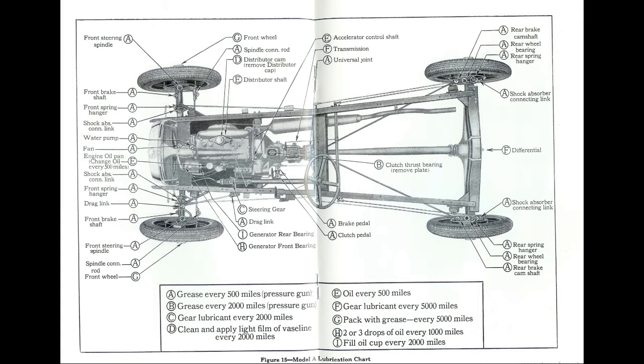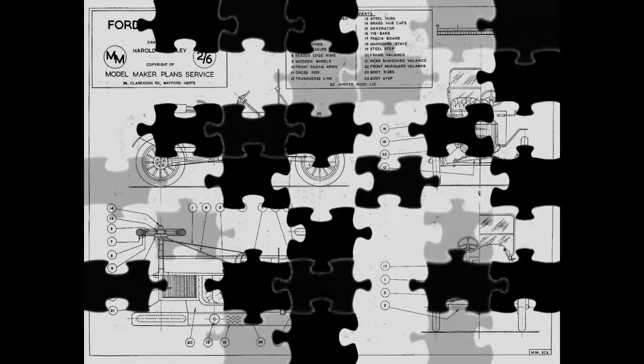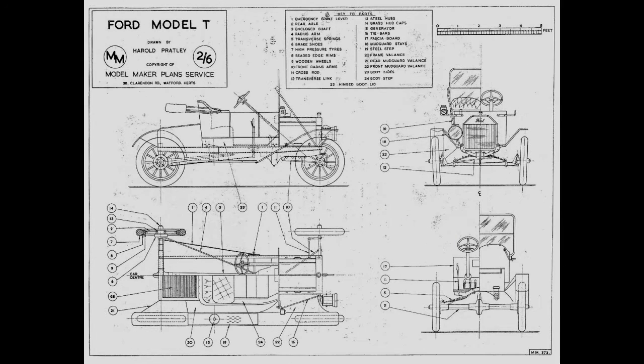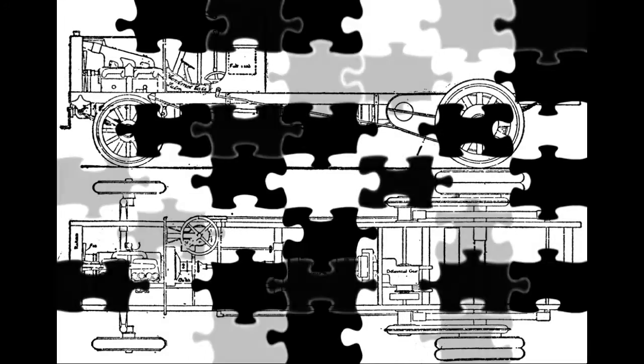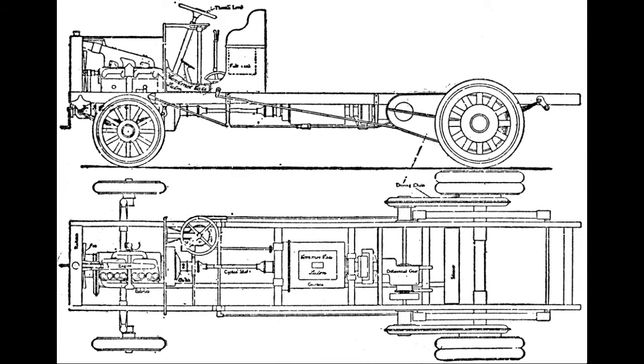The first mass production car, the Ford Model T, was launched in 1908 and was available in a limited range of body styles and colors.